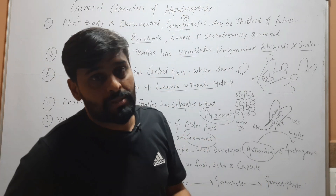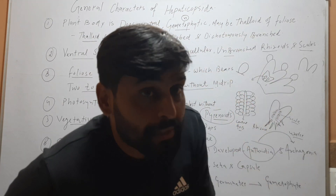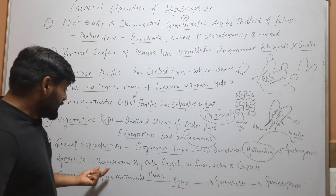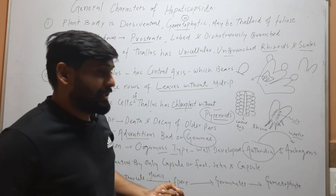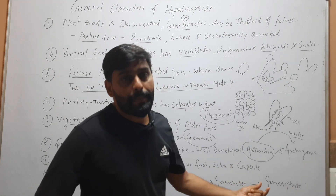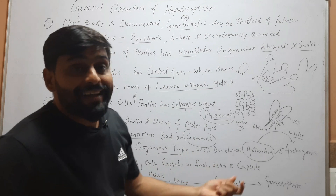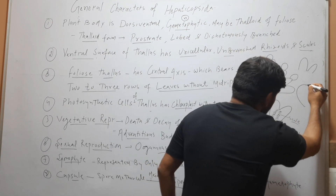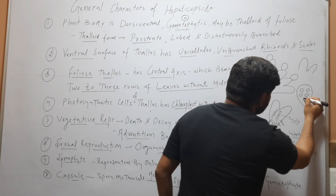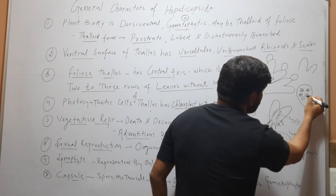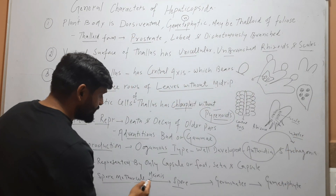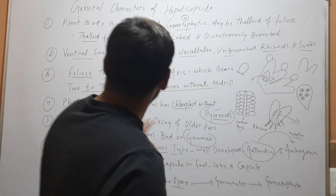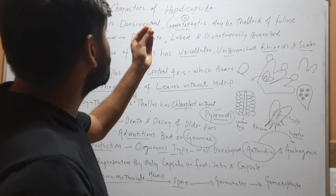The zygote divides by mitosis and forms an embryo. The embryo is retained by the gametophytic plant body, and on further development it forms a sporophyte. The sporophyte may be represented by only a capsule in some species, but in other species it may have a foot, seta, and capsule. This capsule contains spore mother cells, which divide by meiosis and form spores. These spores then germinate and form the gametophyte. So these are the general characters of Hepaticopsida.